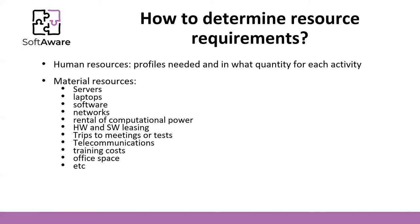Cost comes from the effort and we calculate the cost based on two main issues: human resources — profiles needed and quantified for each activity — and material resources. Material resources include how many servers we need, laptops, software packages, networks, rental of computing power, hardware and software leasing, trips to meetings or testing, telecommunications, training costs, office space, and so on.